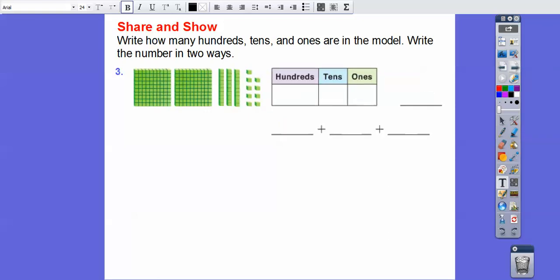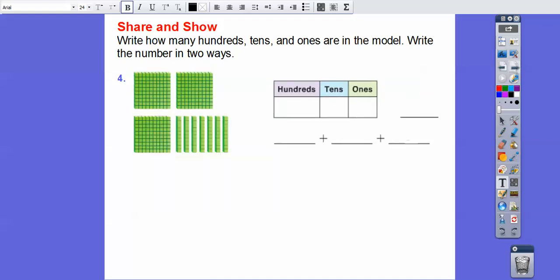How about this guy? Here we have 2 tens plus, I'm sorry, 2 hundreds plus 3 tens plus 9, 9 ones. So we get 239 on that. All right. One more, you guys.